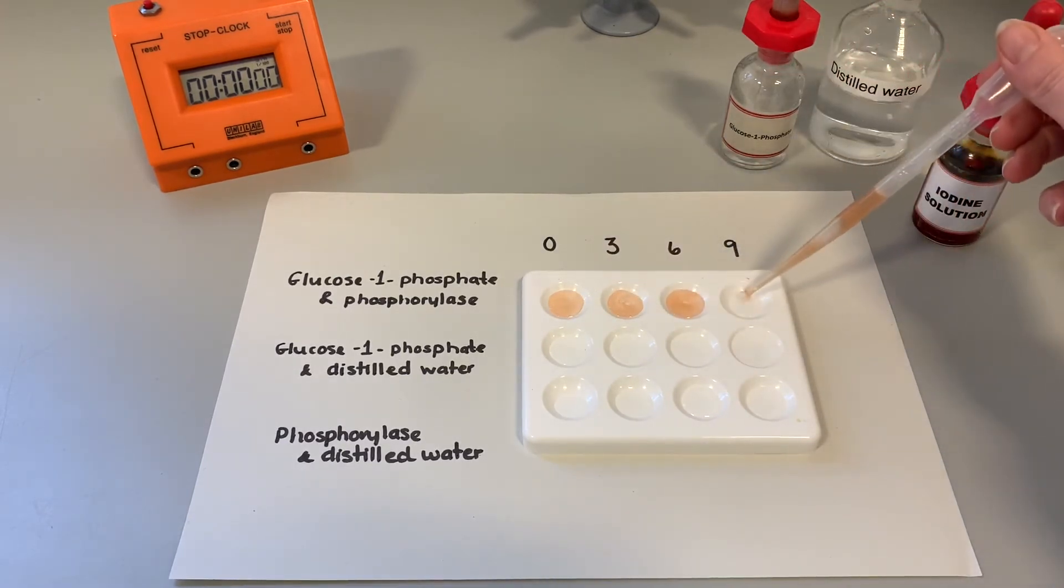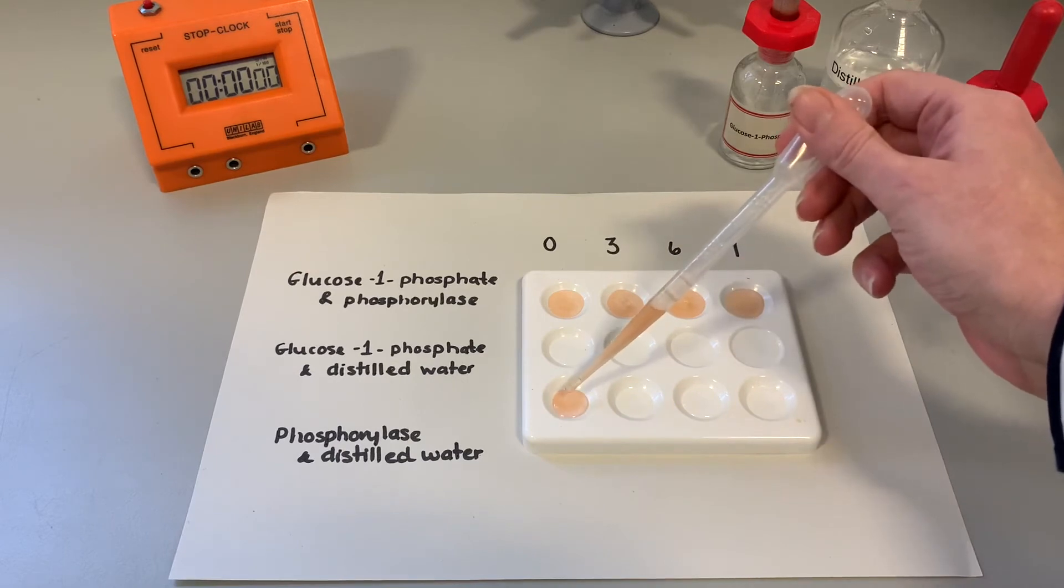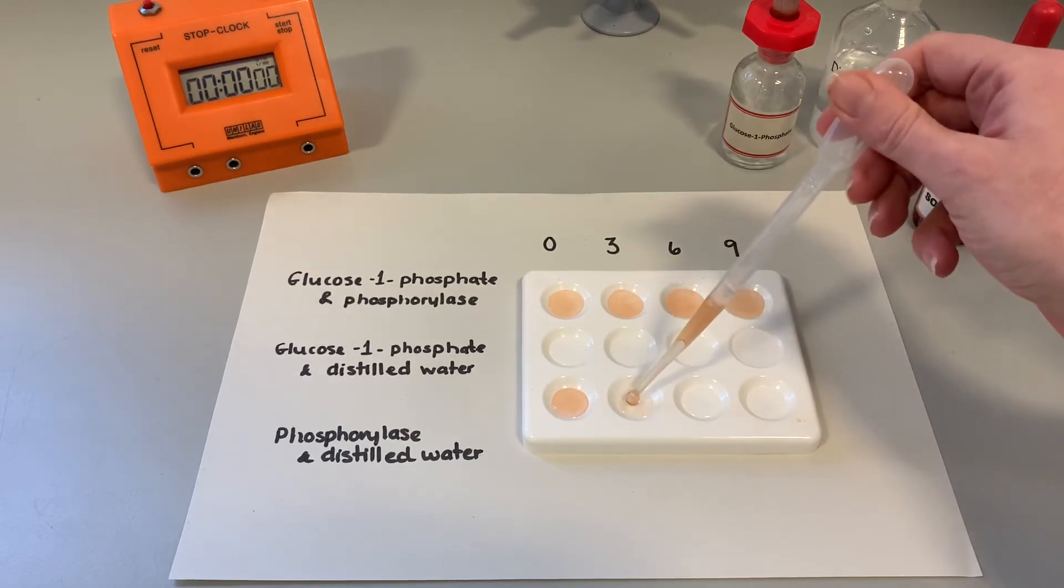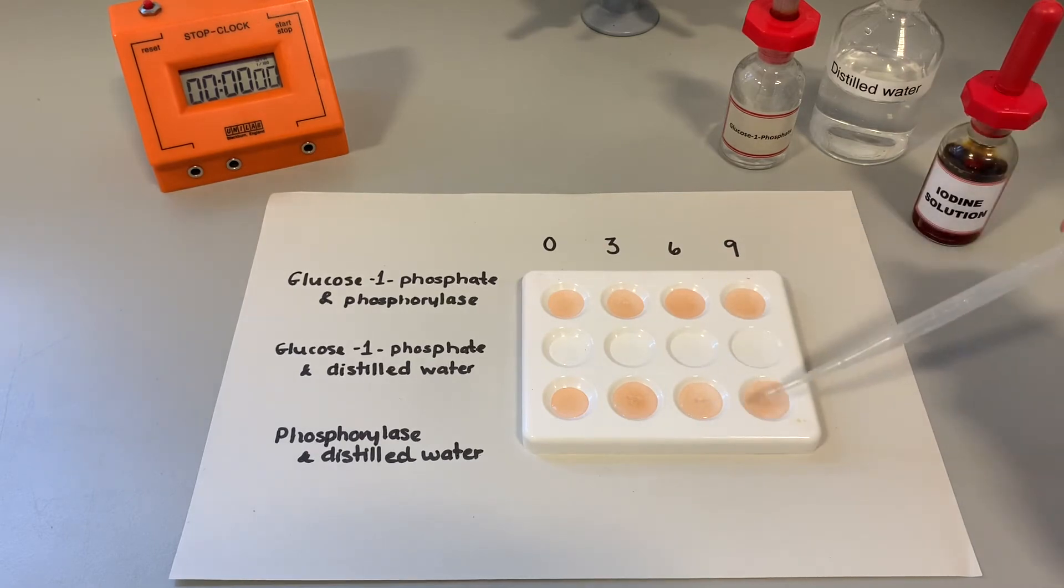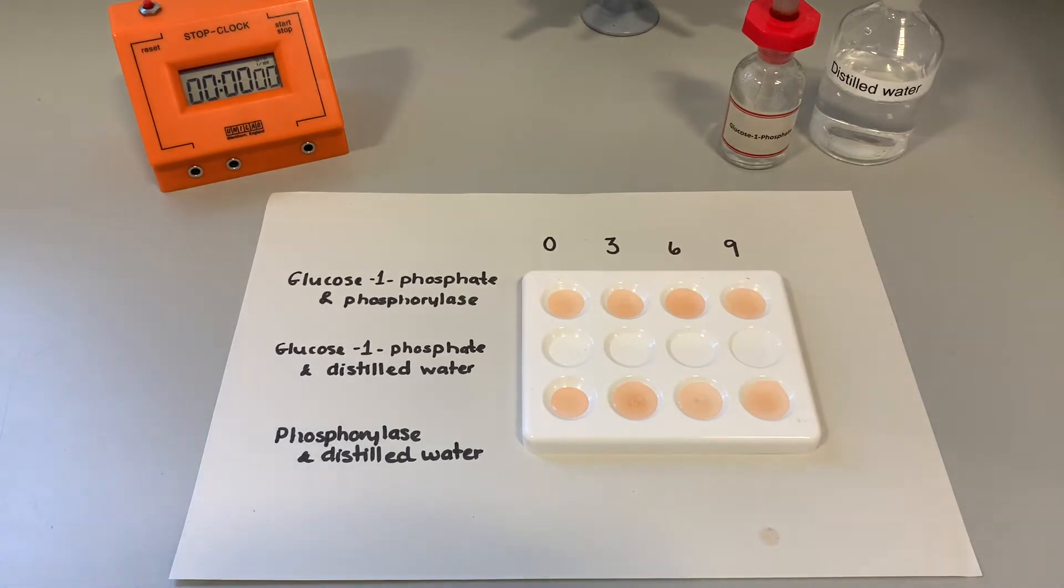Now phosphorylase is an enzyme that we get from potatoes because potatoes are able to turn glucose made during respiration into starch because we all know that potato is a starchy food.